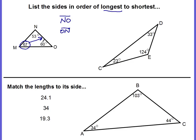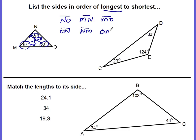Now let's go with the middle. The middle degree is 60 degrees, which is angle O. The side that does not touch it is side MN, which can also be written as NM — make sure you put the line above it. That's the middle side. The smallest angle is 53 degrees, and the side opposite it is MO because it doesn't touch it — so MO or OM. That's the largest-to-smallest order.